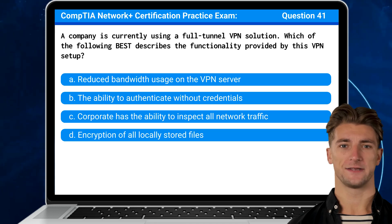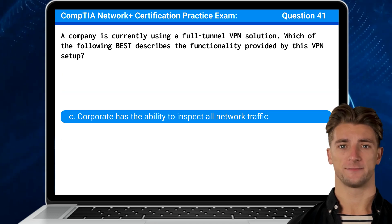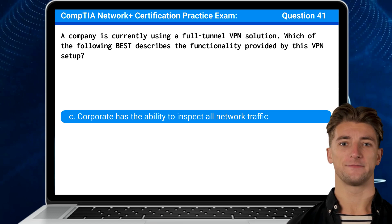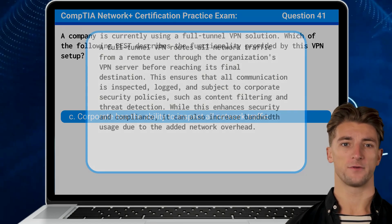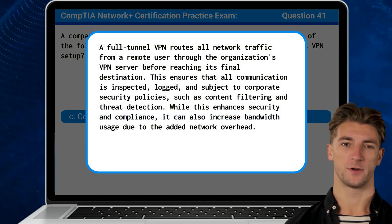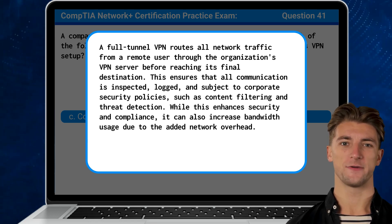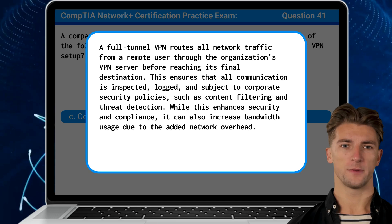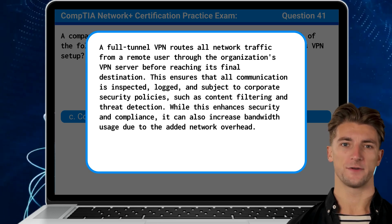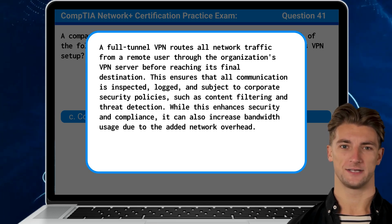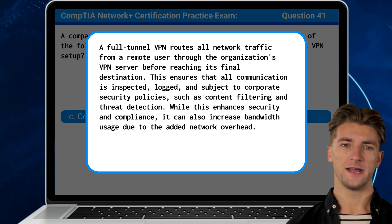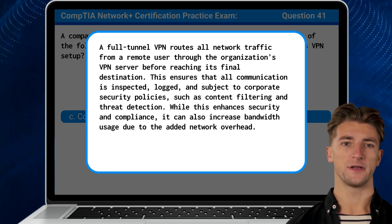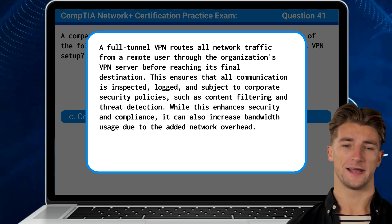The answer is C. Corporate has the ability to inspect all network traffic. A full-tunnel VPN routes all network traffic from a remote user through the organization's VPN server before reaching its final destination. This ensures that all communication is inspected, logged, and subject to corporate security policies such as content filtering and threat detection. While this enhances security and compliance, it can also increase bandwidth usage due to the added network overhead.